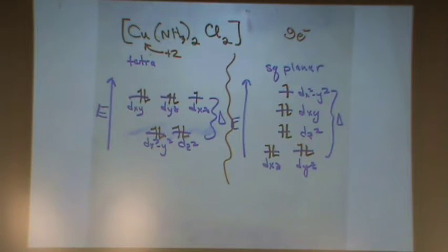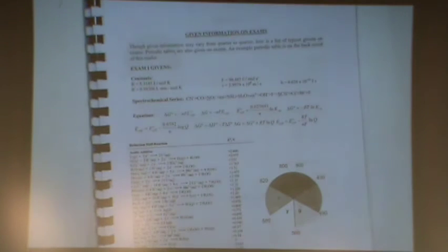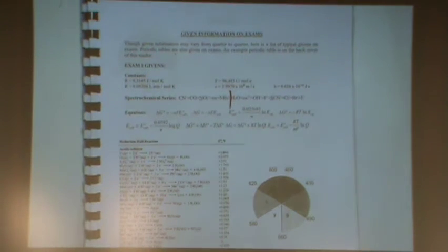How do I know what the strong field is? You look at the spectrochemical series, which will be on the back of your exam. You need to remember that the line between strong and weak is between water and amine. And then you always go with the strongest one if it splits the difference like this one.